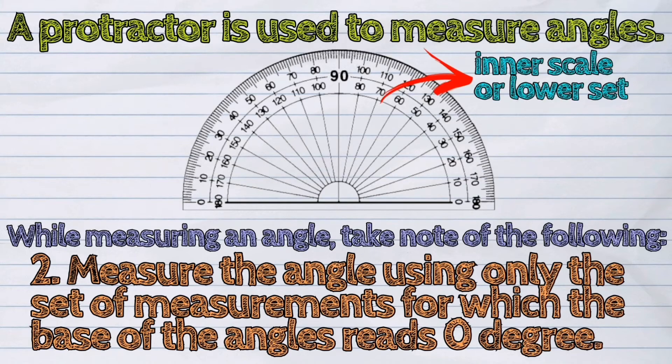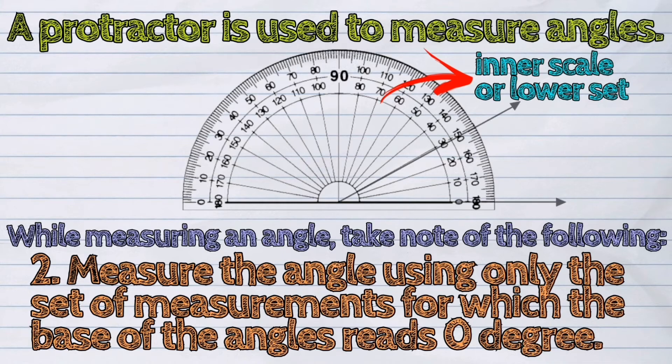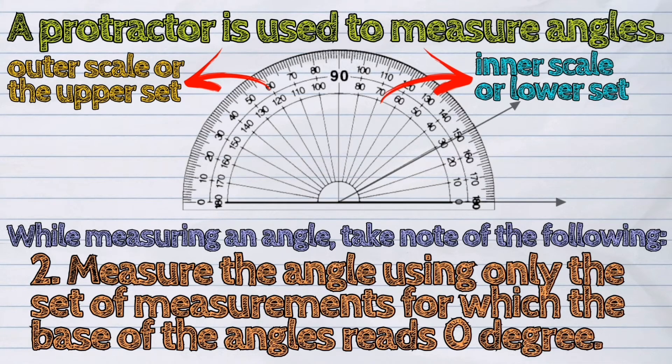It means the inner scale or lower set of the protractor is used if the angles open to the right, while the outer scale or the upper set is used if the angles open to the left.